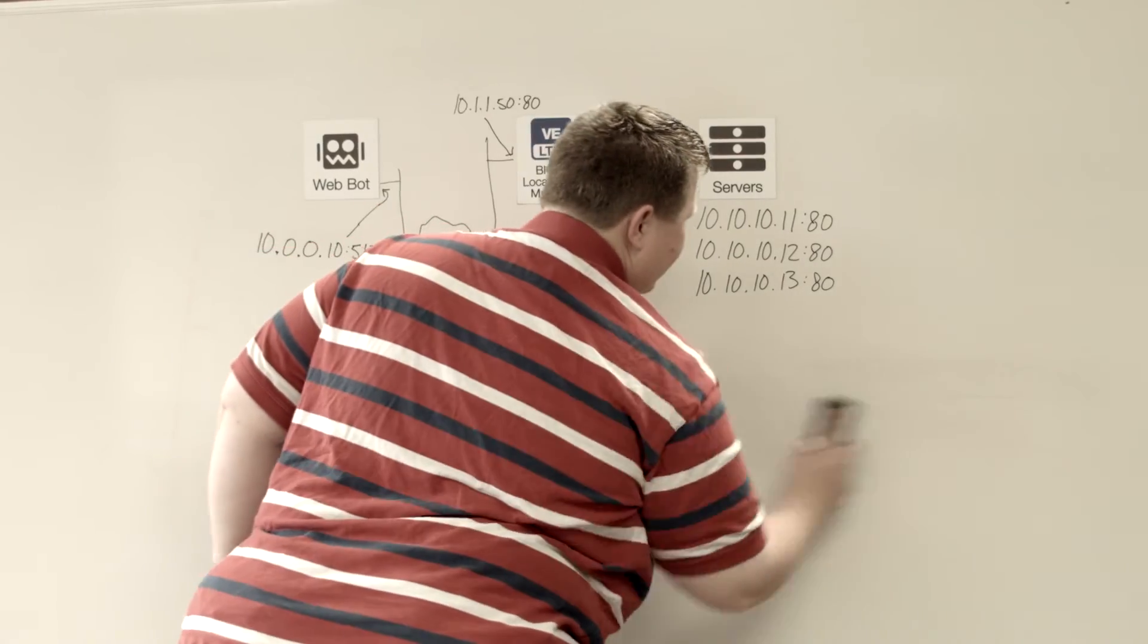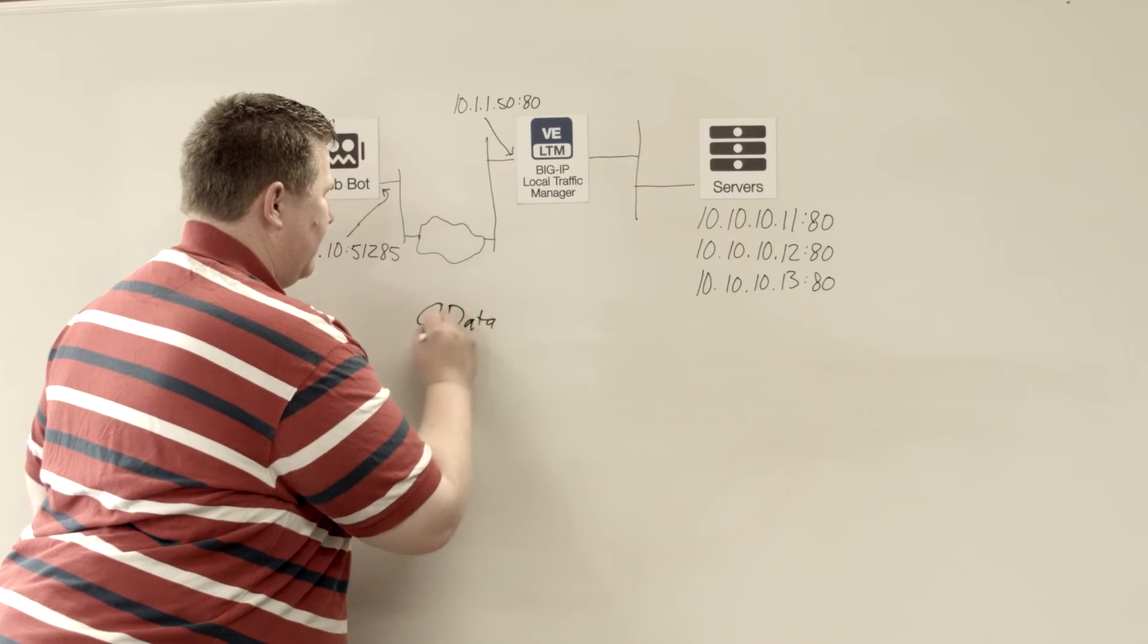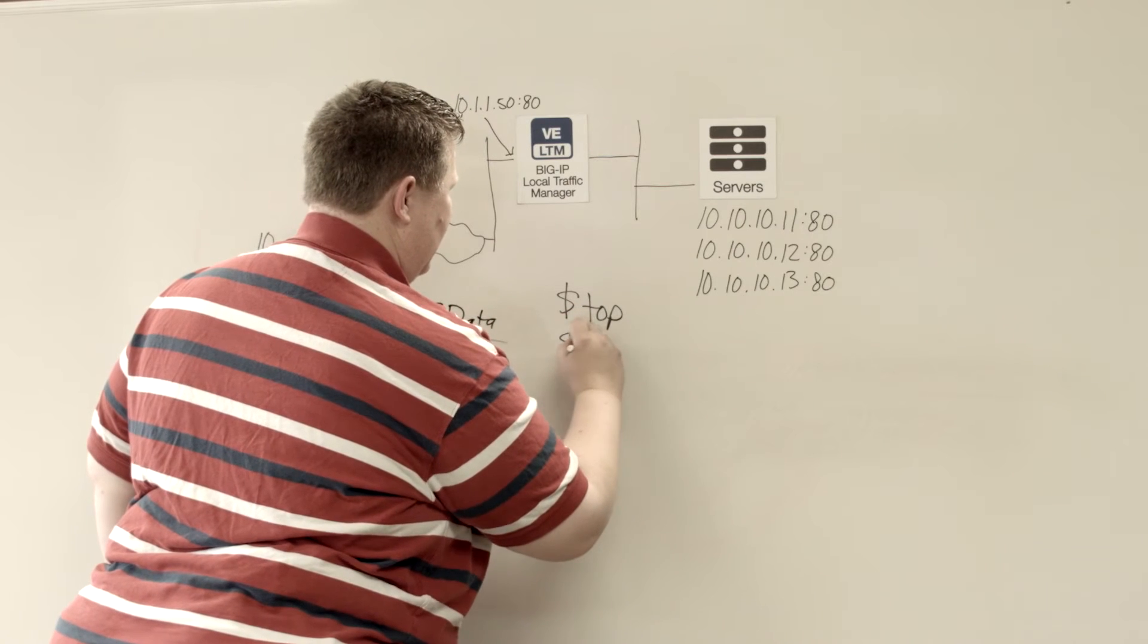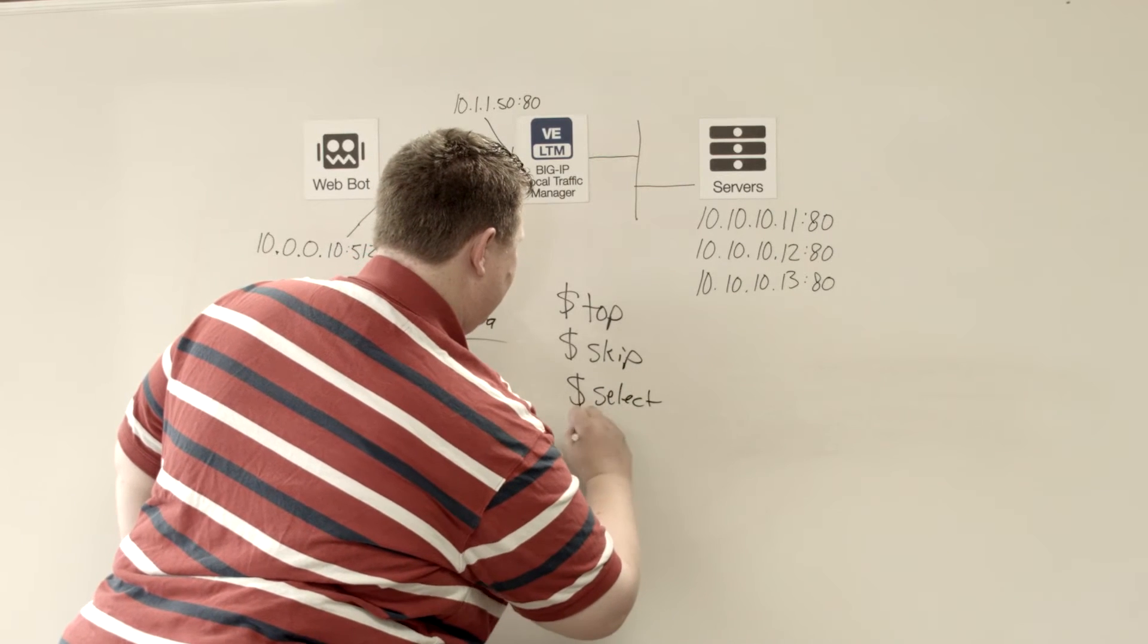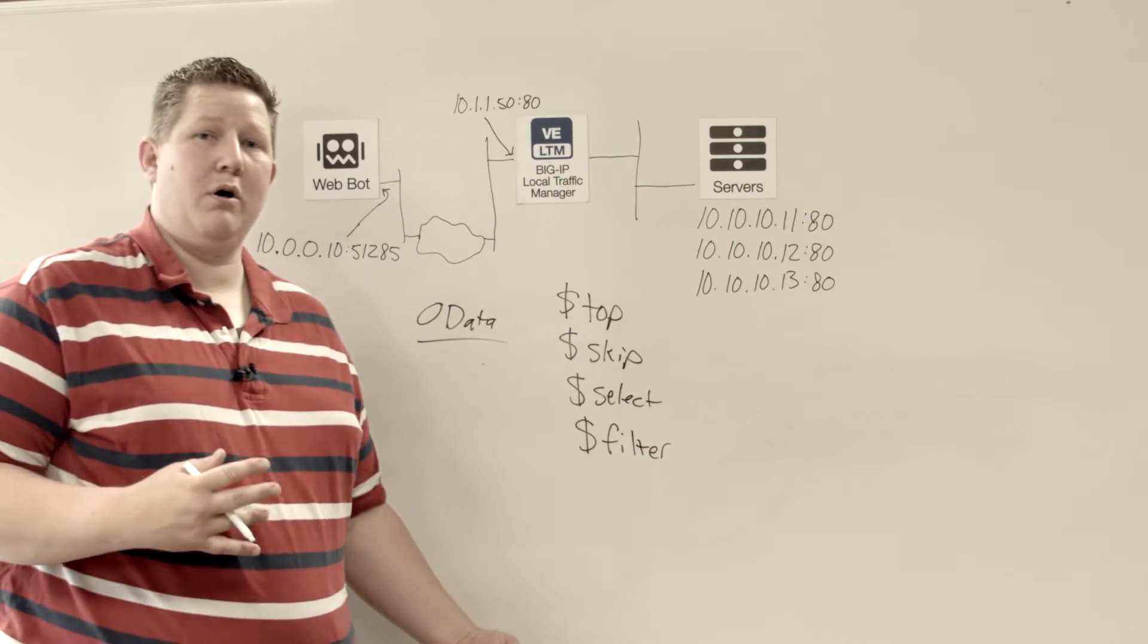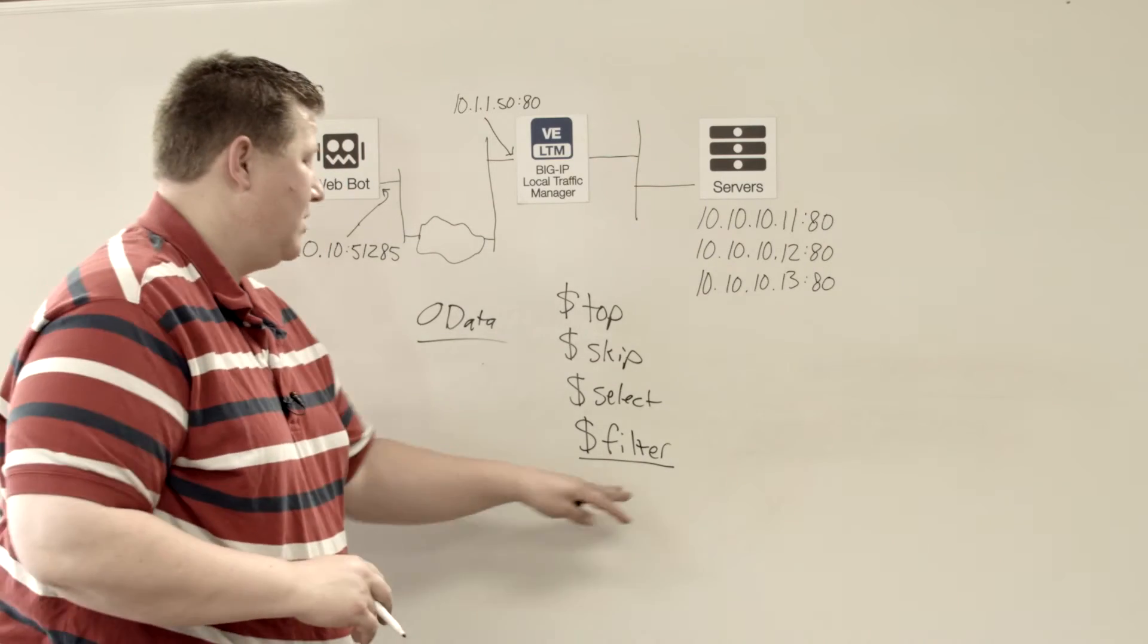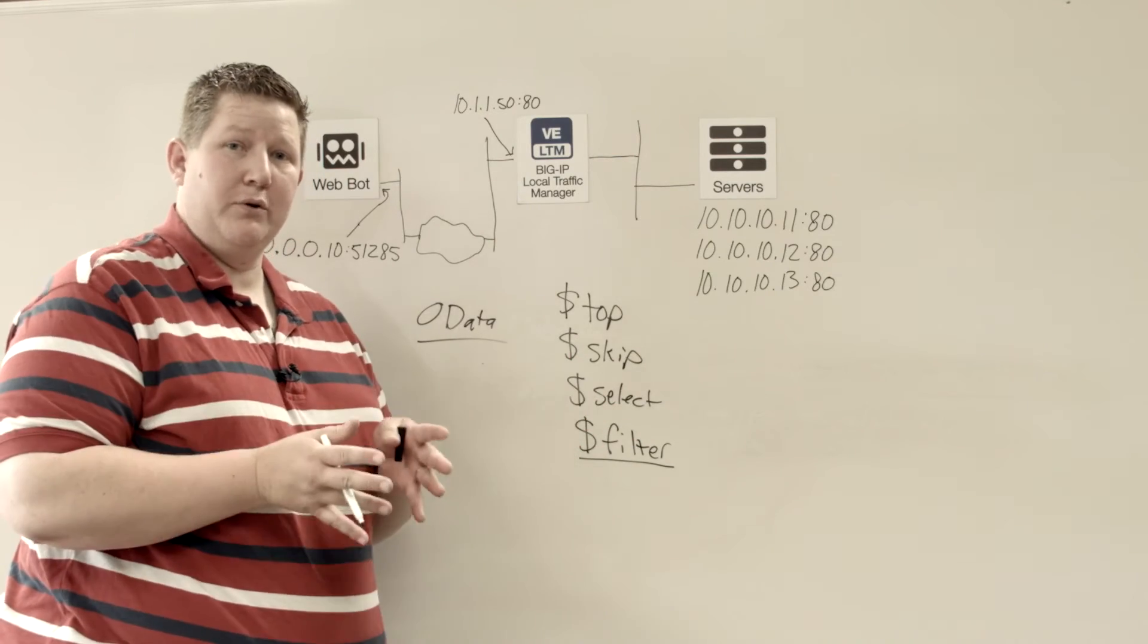Also with the API is the OData. This is the open data protocol for REST. And so some of the OData query parameters are top, and skip, and select, and filter. Now there are more within the OData protocol definition, and even there's more you can do with filter in the OData standard. With filter, that's limited to filtering down to partitions. So you would use filter only in the context of refining all of your return results to a specific partition.